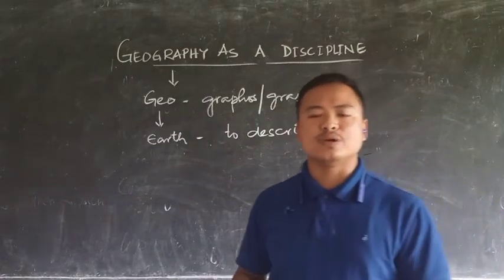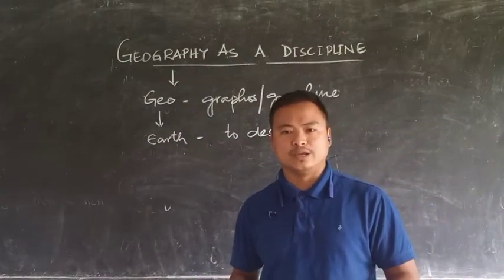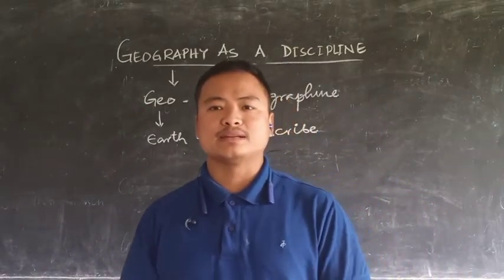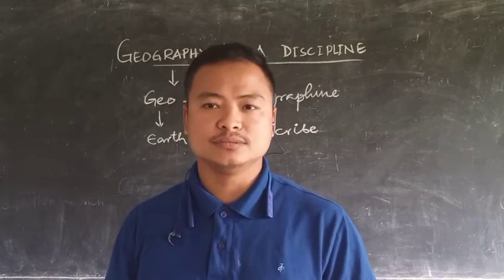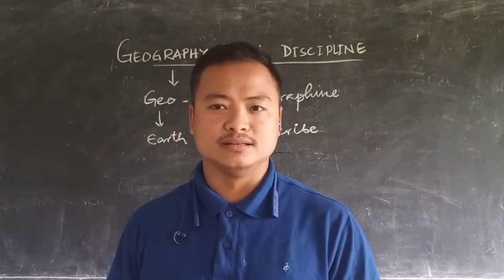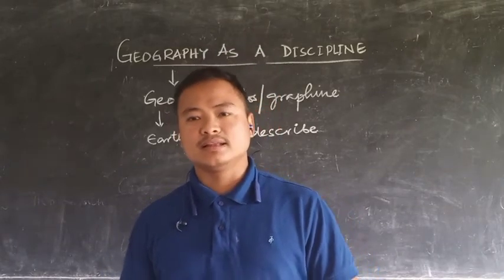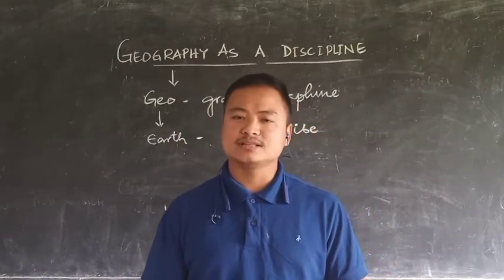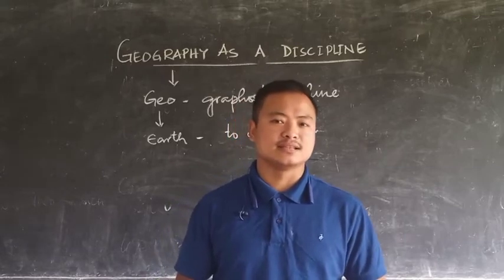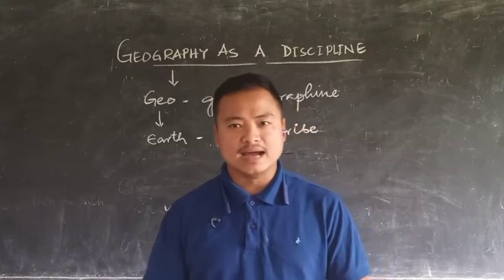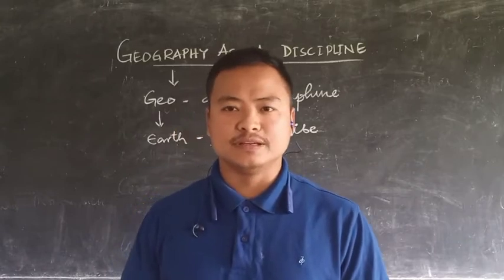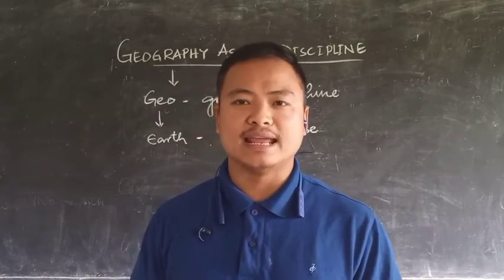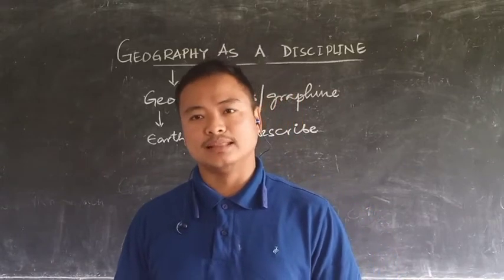There are various scholars who have defined geography in their own way. It depends on the perspective of how people take it about the earth. There are some scholars who have defined geography as the home of mankind, because it is the only planet that sustains life. While there are some scholars with the view that geography is the study of the interaction between man and his environment.